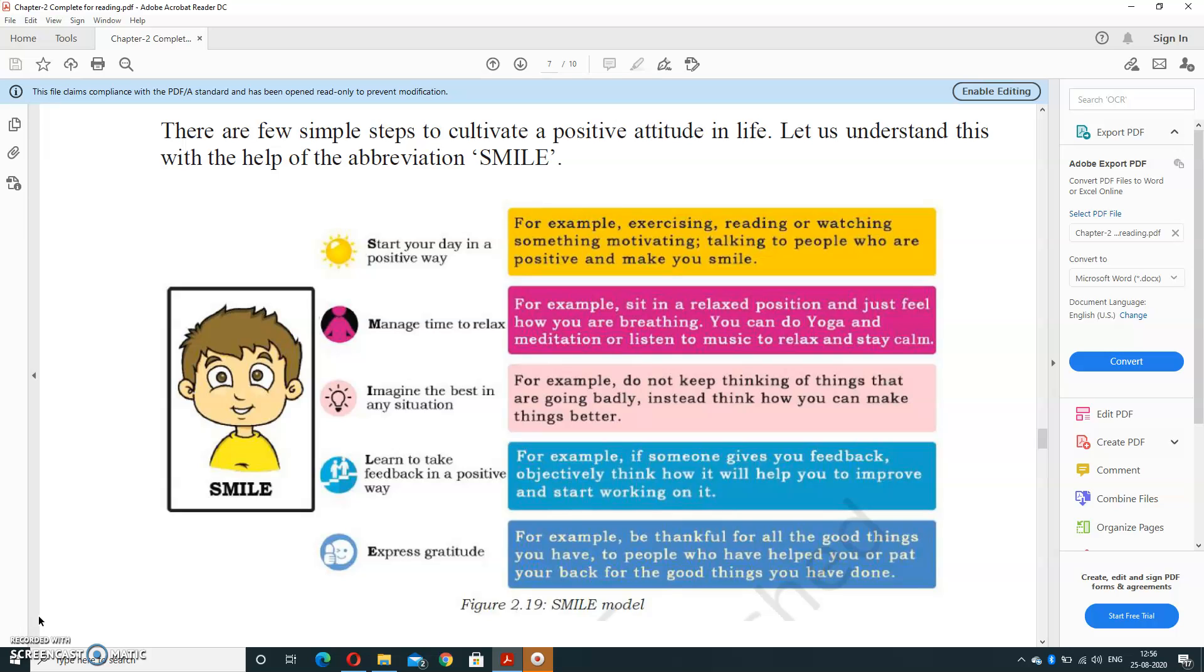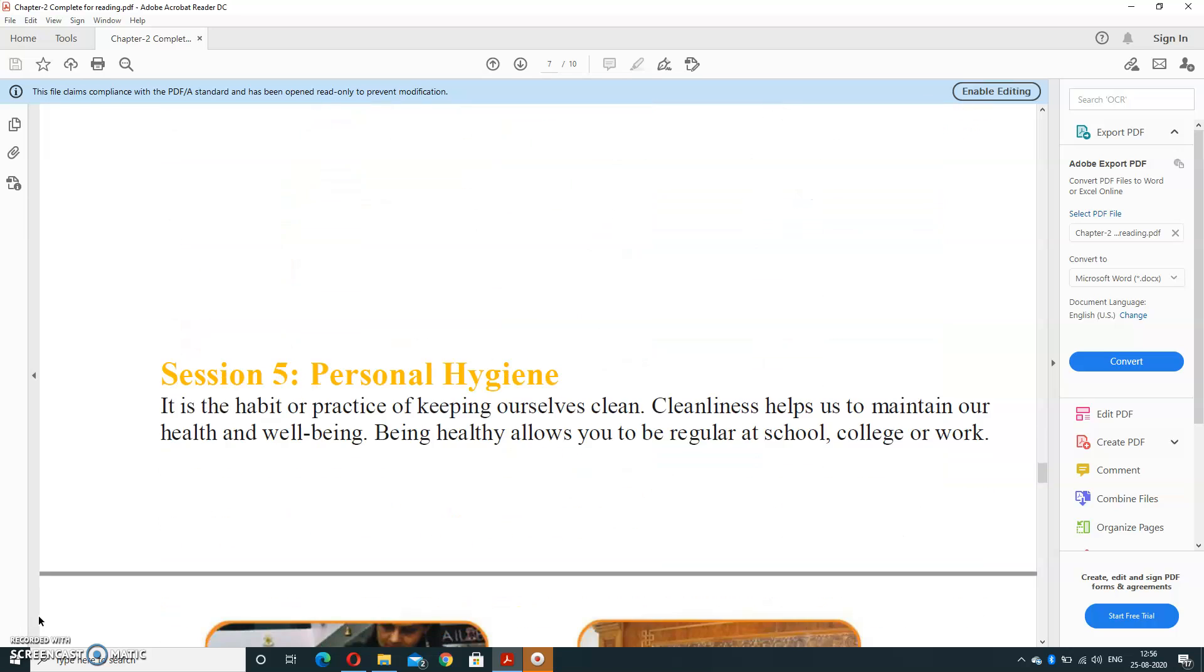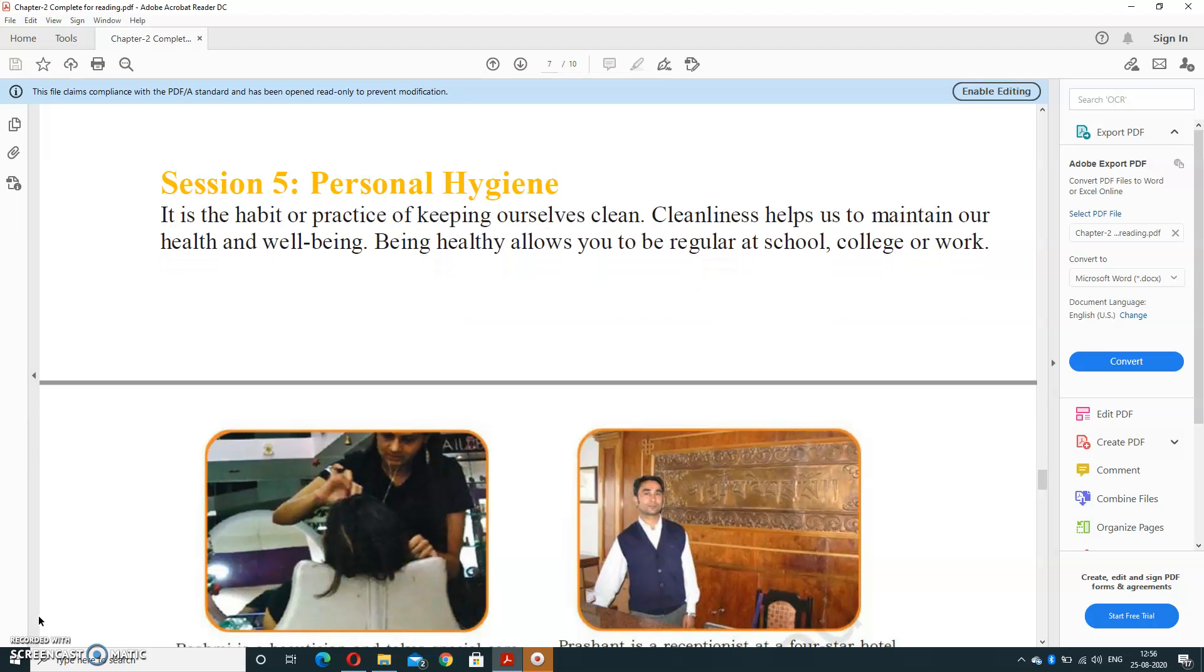So overall confidence is due to positive attitude, and positive attitude can be followed by five steps, that is called the SMILE model. Next part is session five: personal hygiene. Generally, it's the habit of a person or daily practice of keeping ourselves clean.